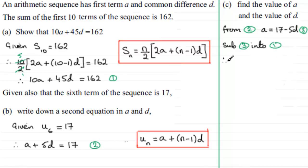And so what does that give us? We therefore have 10 times A, but we've got that A is equal to 17 minus 5D. So 17 minus 5D there. And then we've got plus 45D. And that equals 162.